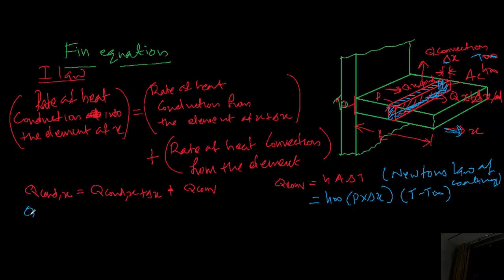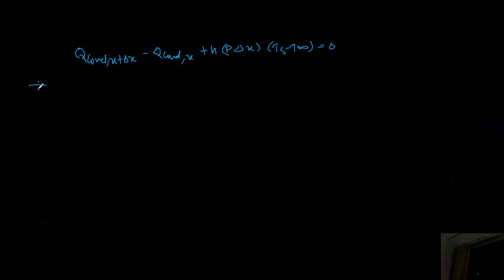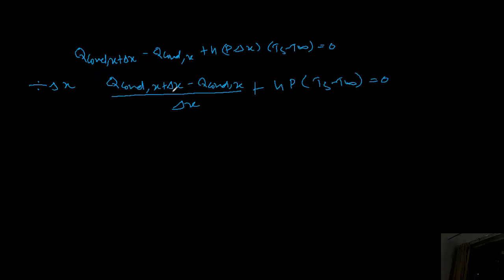We rearrange the equation as: Q conducted at X plus delta X minus Q conducted at X, plus Q convected equals zero. Dividing by delta X gives the derivative form: dQ_conducted/dX plus H·P·(T - T∞) equals zero. By Fourier's law, Q conducted equals minus K·A.